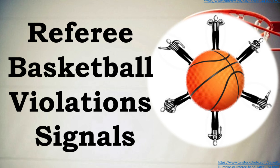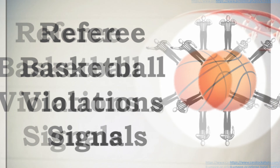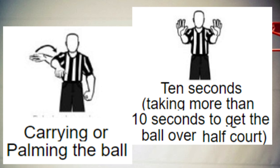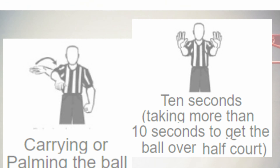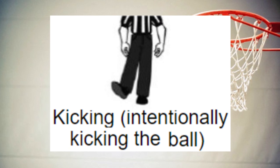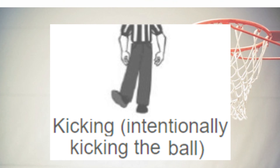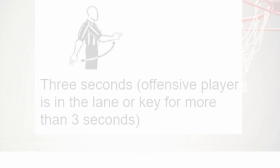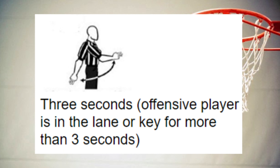Now let's go to referee basketball violation signals. The first one is walking or traveling — not bouncing the ball while walking. Next is illegal or double dribble. Then carrying or palming the ball. Taking more than 10 seconds to get the ball over half-court. Kicking — intentionally kicking the ball — and over-and-back half-court violation. And 3 seconds: an offensive player is in the lane or key for more than 3 seconds.